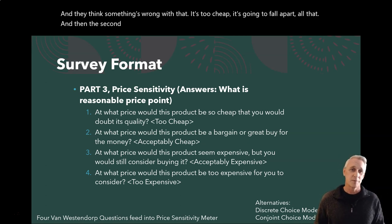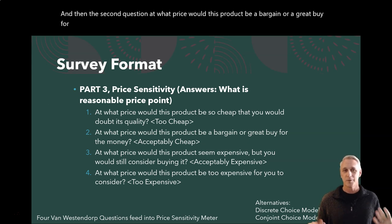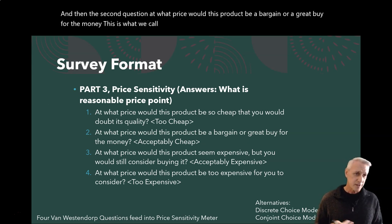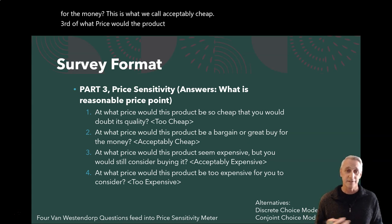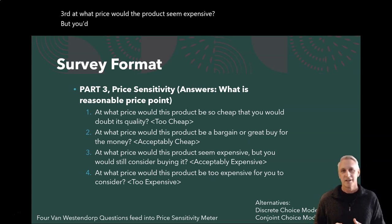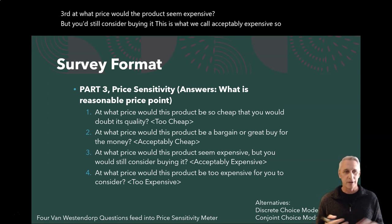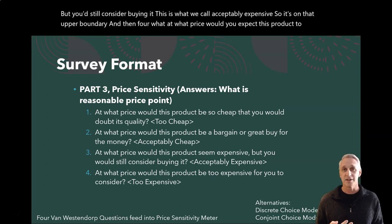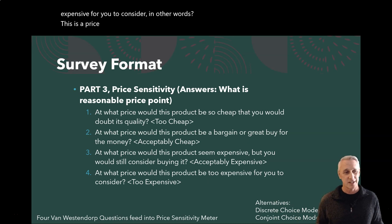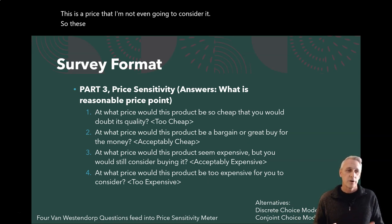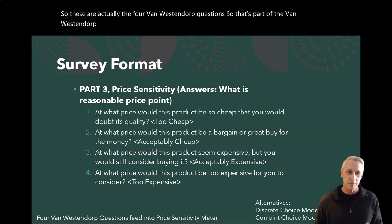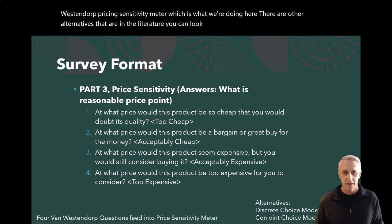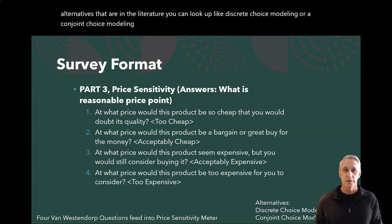The second question: at what price would this product be a bargain or a great buy for the money? This is what we call acceptably cheap. Third: at what price would the product seem expensive but you'd still consider buying it? This is what we call acceptably expensive — it's on that upper boundary. And four: at what price would you expect this product to be too expensive for you to consider? These are actually the four Van Westendorp questions — part of the Van Westendorp Pricing Sensitivity Meter. There are other alternatives in the literature like discrete choice modeling or conjoint choice modeling.